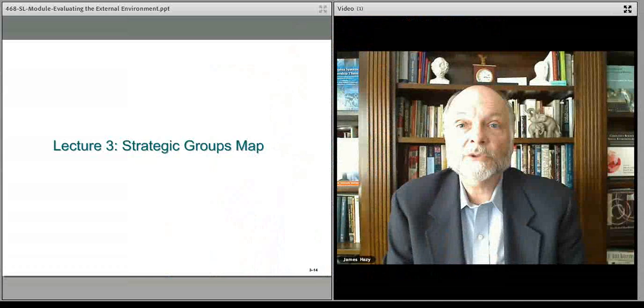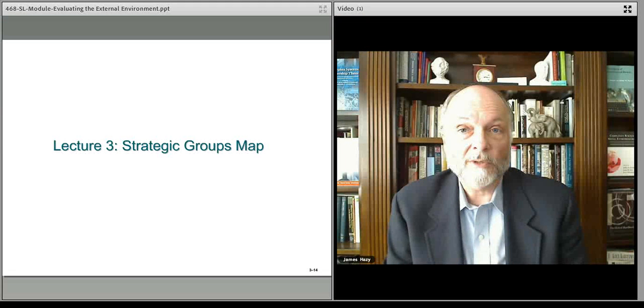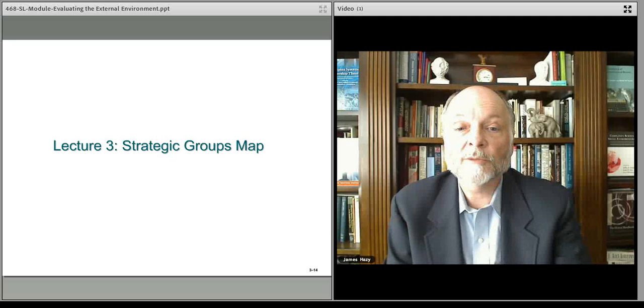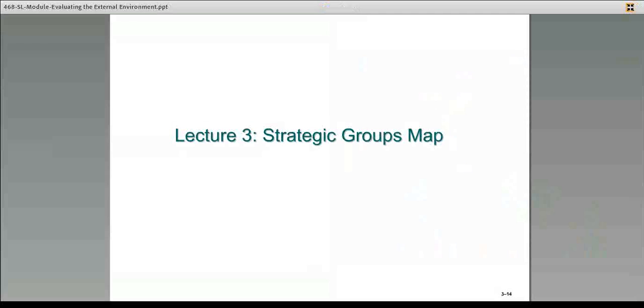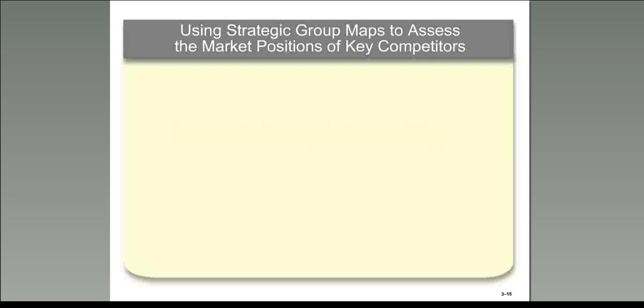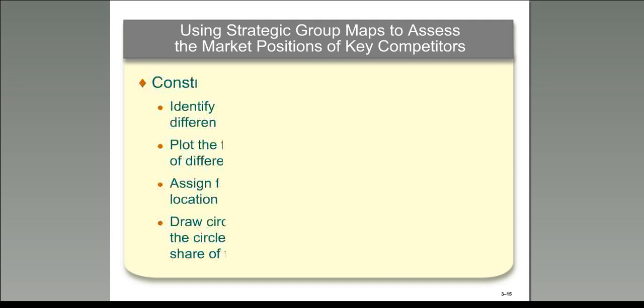This lecture continues the discussion about external evaluation of the external environment for strategic purposes — situational awareness in the external environment. This particular lecture will talk about a conceptual approach called strategic group mapping or strategic group maps. The idea here is to understand how other companies and the competition in an industry look vis-a-vis various kinds of approaches.